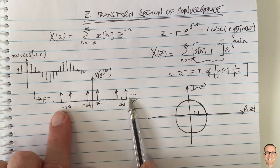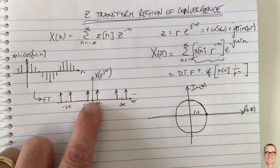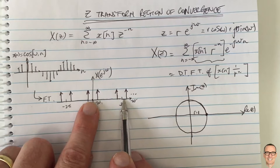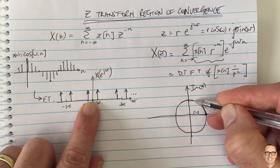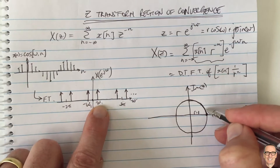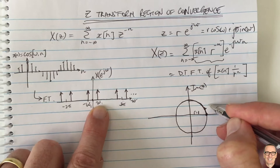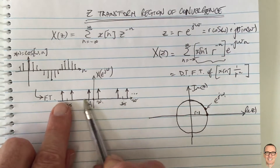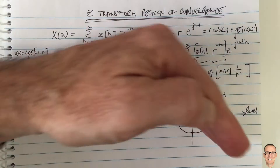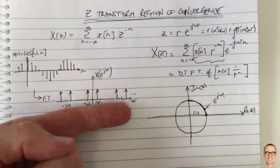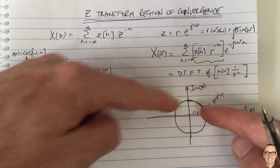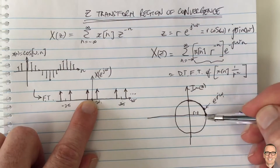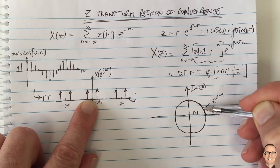When omega equals 0 in the Fourier transform plot, we're at the rightmost point on the Z-plane unit circle. As we increase omega in the Fourier transform, we're moving around this circle in the Z-plane. At the point where omega equals omega_1, we're at e to the j omega_1 on the circle. What we're doing is taking this Fourier transform, flipping it vertically, and wrapping it around the circle — starting at the origin moving along the frequency axis maps to moving around the circle.